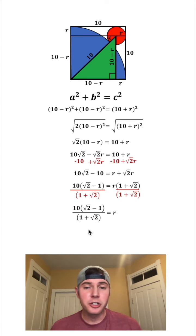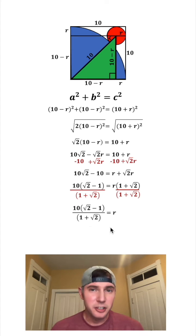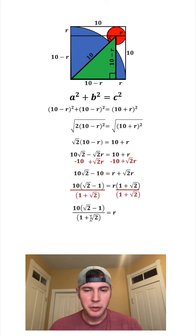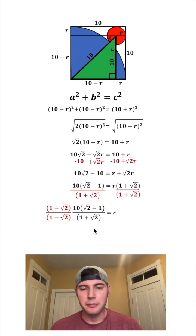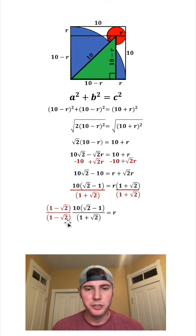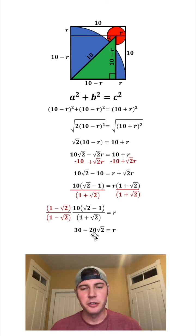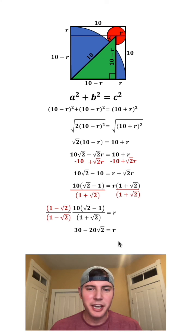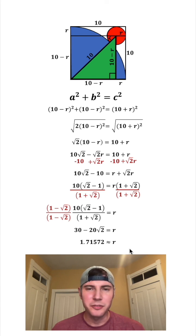From here you could just plug this into a calculator and get an approximate value. Something else we can do is called rationalizing the denominator — if we want to get rid of the √2 in the denominator, we can multiply top and bottom by the conjugate of (1 plus √2), which is (1 minus √2). This simplifies into 30 minus 20√2. If we plug either one into a calculator, we get approximately 1.71572.